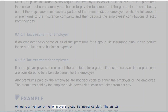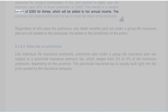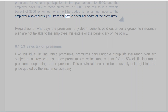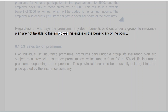Example: Amy is a member of her employer's group life insurance plan. The annual premiums for Amy's participation amount to $500, and the employer pays 60% of these premiums, or $300. This results in a taxable benefit of $300 for Amy, which will be added to her annual income. The employer also deducts $200 from her pay to cover her share of the premiums. Regardless of who pays the premiums, any death benefits paid out under a group life insurance plan are not taxable to the employee, his estate, or the beneficiary of the policy.